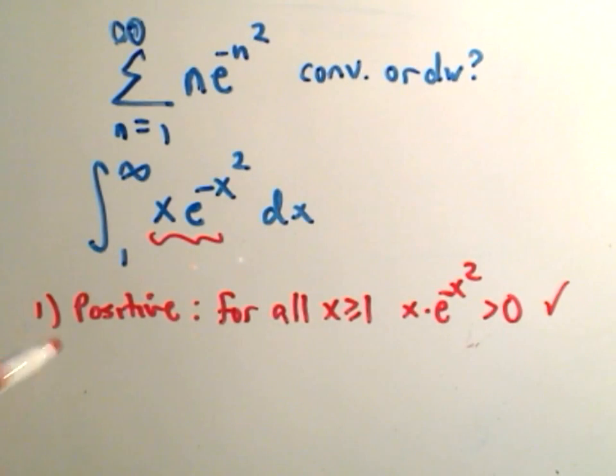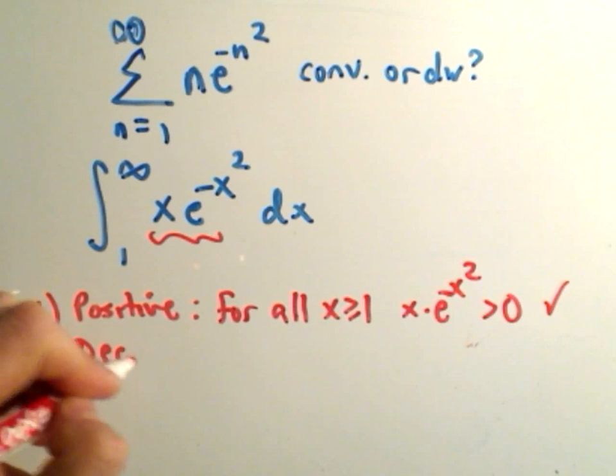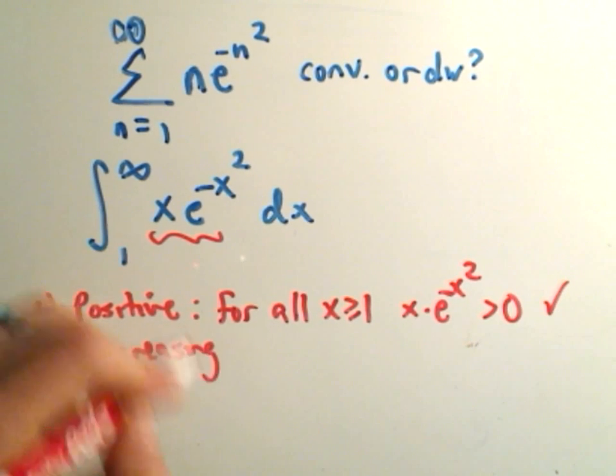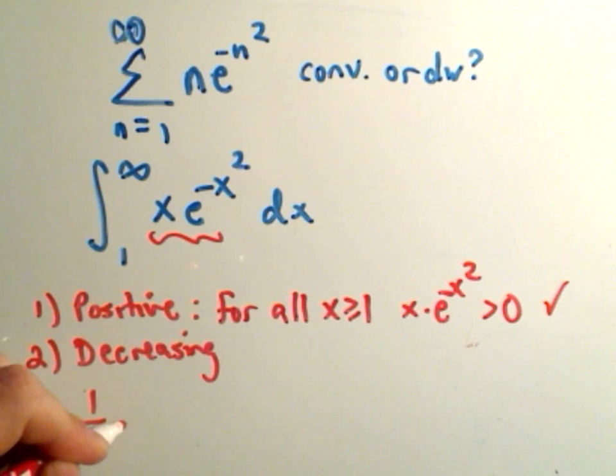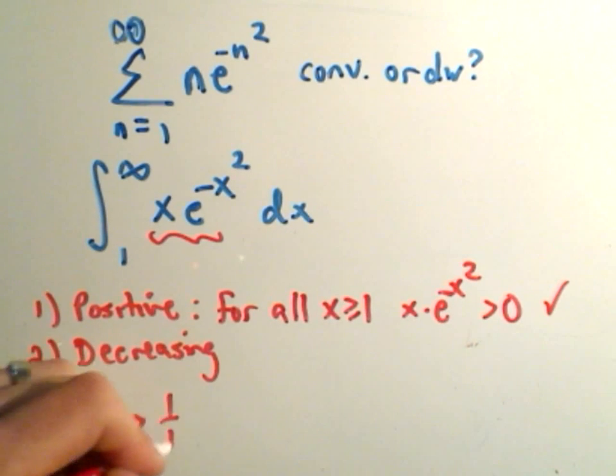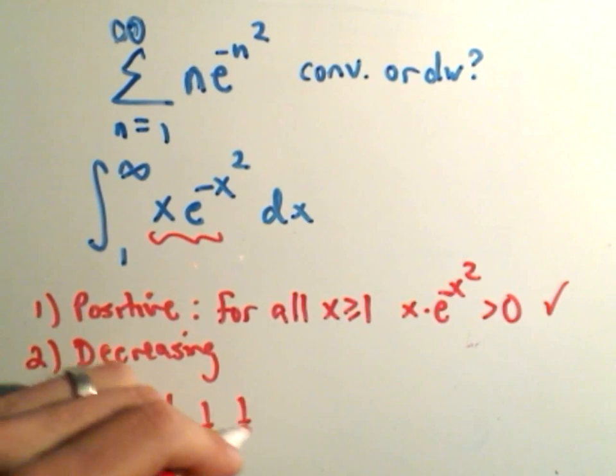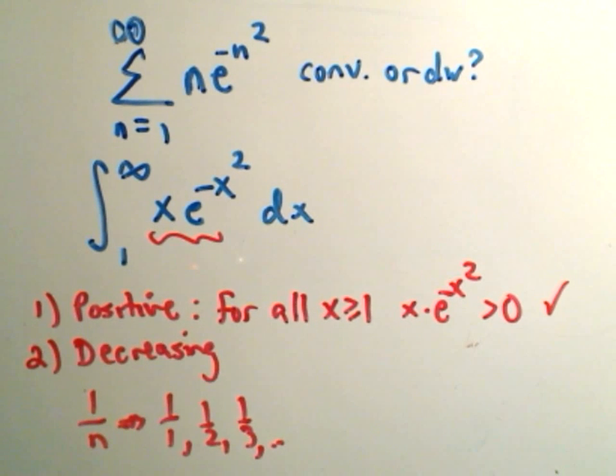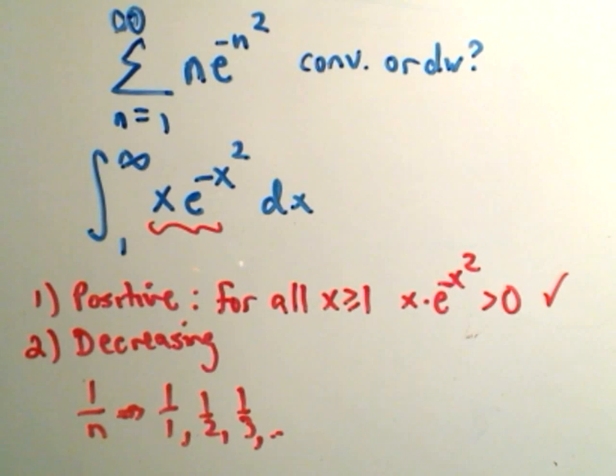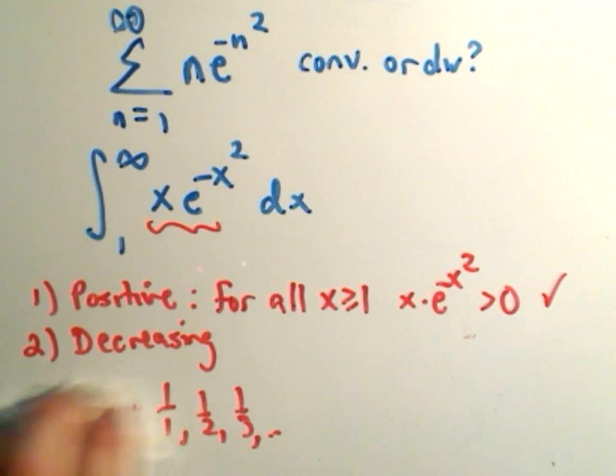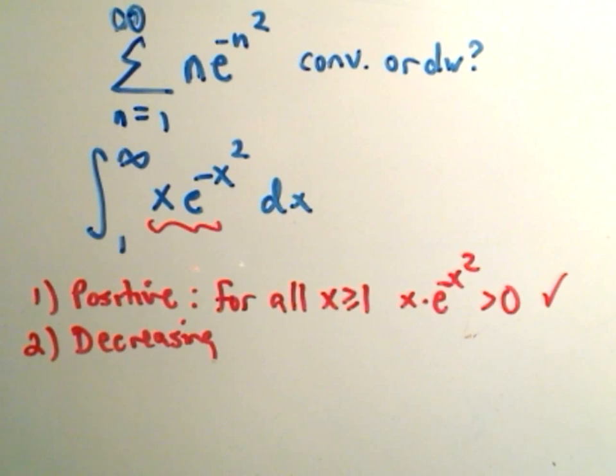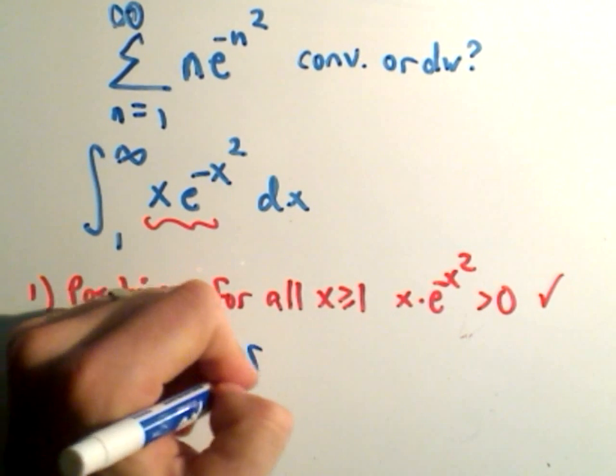Okay, so the second thing we have to show, though, is it's decreasing. If you have a function like 1 over n, you can just start plugging in numbers, I think. 1 over 1, 1 over 2, 1 over 3, etc. And, again, then I think you can get by with saying it's clearly decreasing. But here, you know, we have x e to the negative x squared. You know, intuitively, maybe you can convince yourself it's decreasing. But the idea is to show something's decreasing.